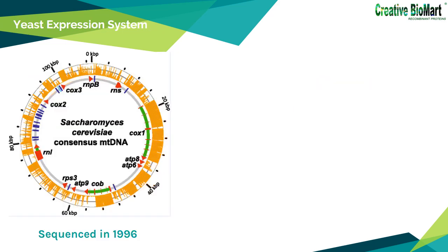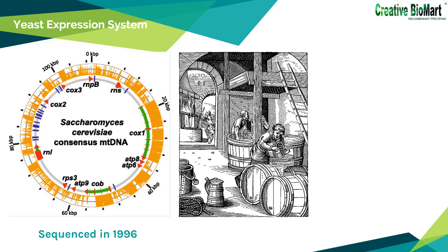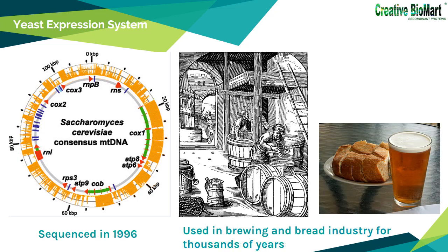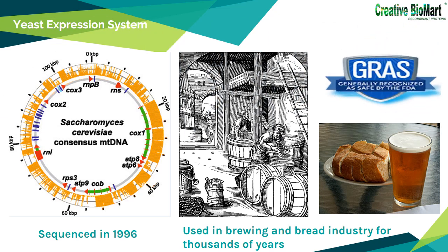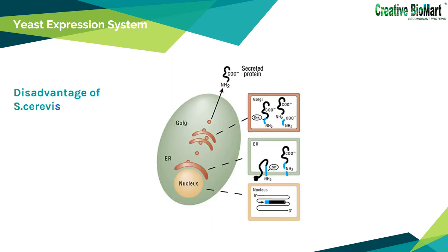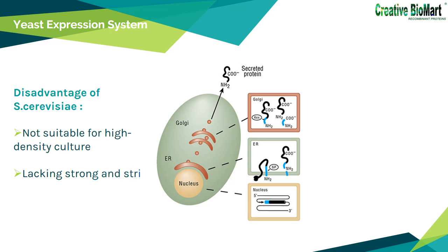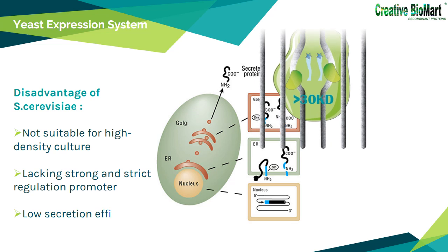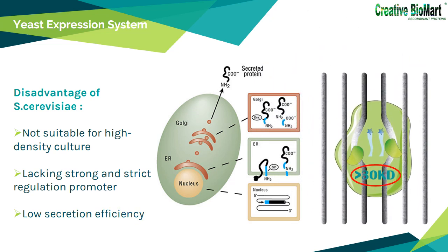Yeast system: The yeast system, as a new exogenous protein expression system, contains merits from both prokaryotic and eukaryotic expression systems and is being widely used in the field of genetic engineering. The complete gene sequence of Saccharomyces cerevisiae was sequenced in 1996. The use of S. cerevisiae in the brewing and bread industry has been known for thousands of years, and it is considered to be a safe organism that does not produce toxins and has been recognized by the FDA. Thus, productions expressed from the yeast system do not require extensive host safety experiments. However, compared with newer yeast systems, S. cerevisiae is not suitable for high-density culture, lacks strong and strictly regulated promoters, and its secretion efficiency is low — especially for target proteins with molecular weight greater than 30 kDa, which almost do not secrete.